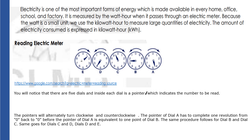You will notice that there are five dials, and inside each dial is a pointer which indicates the number to be read. The dials — the five circles you see — from right to left are dials A to E. The pointers will alternately turn clockwise and counter-clockwise. Clockwise means the same direction as a clock. Dial E, dial C, and dial A move clockwise.